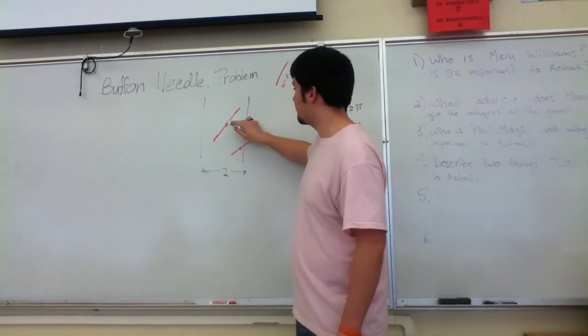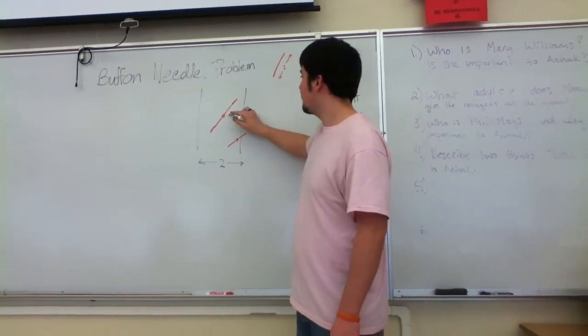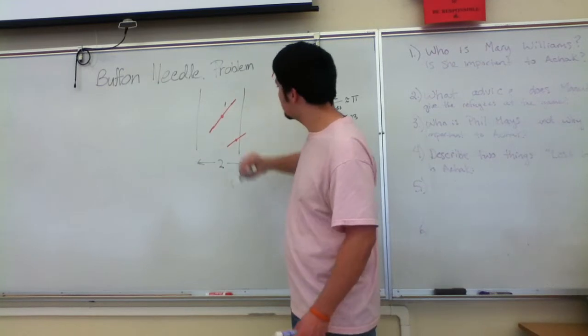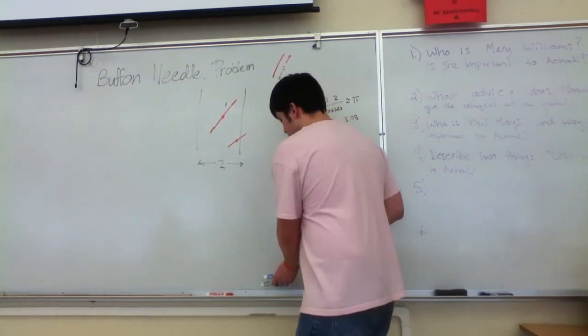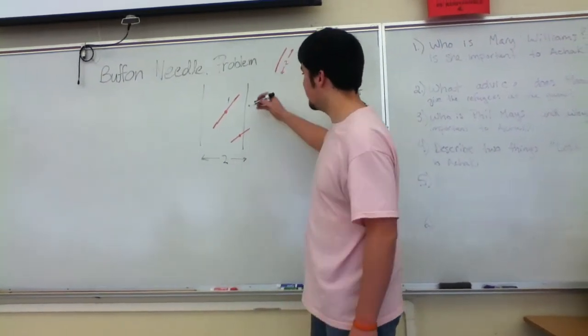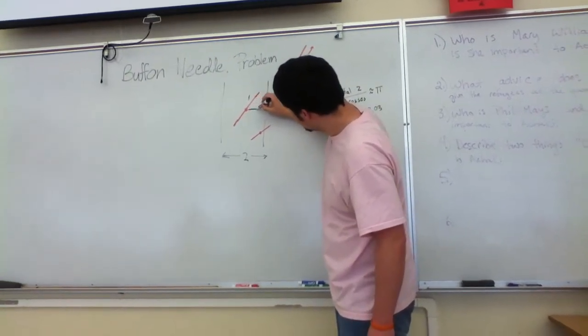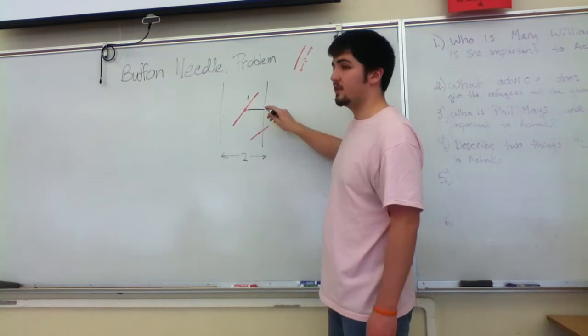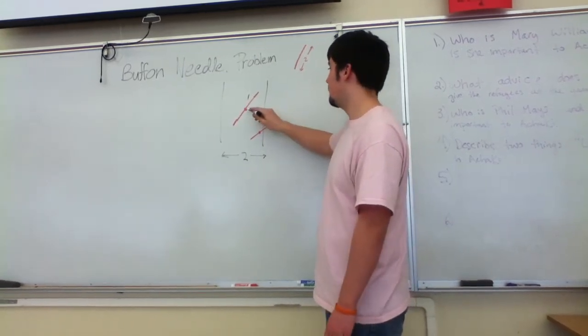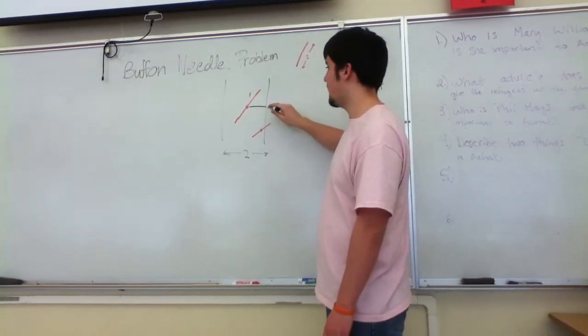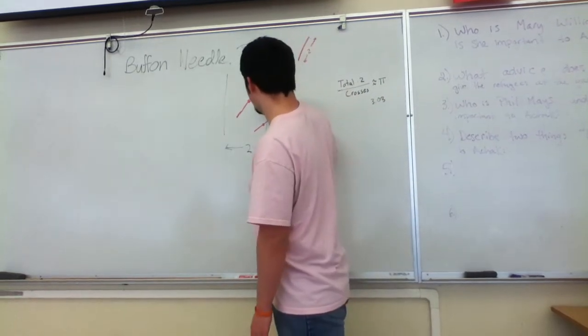If we were to mark where the midpoint is, we'll draw a solid line which represents the distance between the midpoint and the line. We'll call that x.